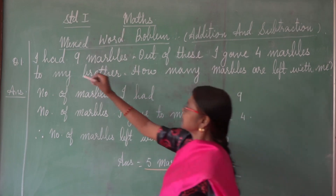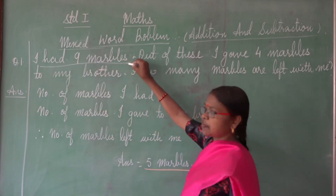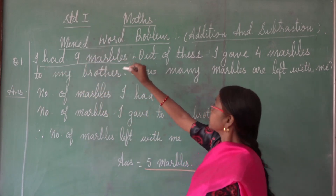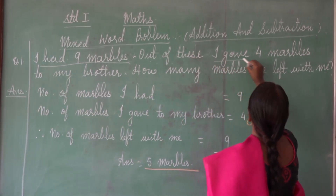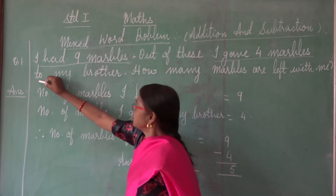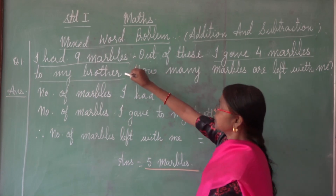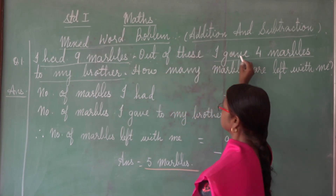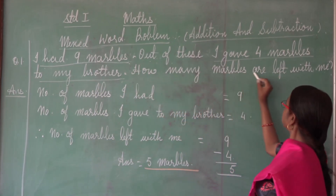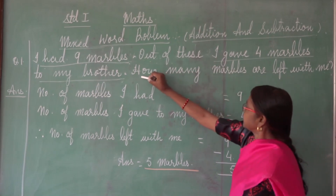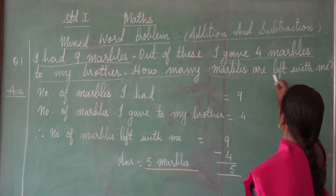Now, you see here — I had nine models. From here to here, you have to take the first statement. Out of these, I gave four. How many models did you give to your brother? Four models, you gave to your brother. This is the second full stop. From here to here, you have to make the second statement. Now, how many models are left? It is asking how many — marbles are left with me.